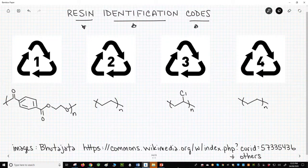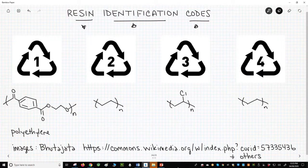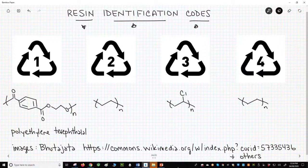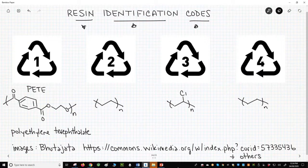We'll look at codes 1 through 7. On the screen are codes 1 through 4. Code number 1 corresponds to polyethylene terephthalate, or PETE. Polyethylene terephthalate is a condensation polymer made from the monomers ethylene glycol and terephthalic acid. The code often has P-E-T-E below the symbol.